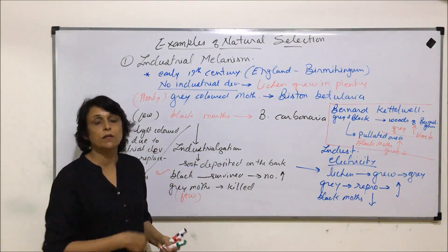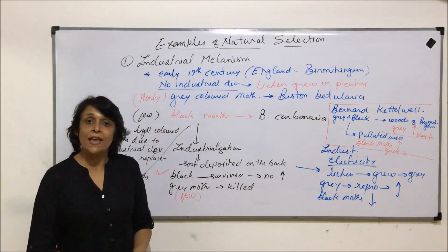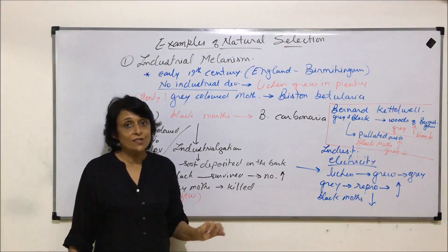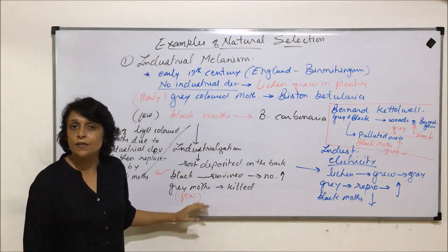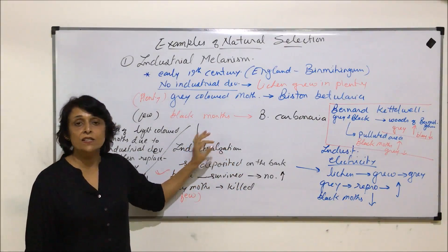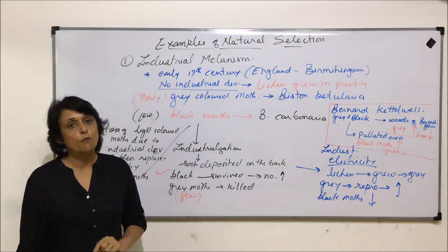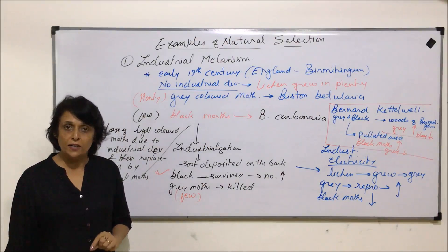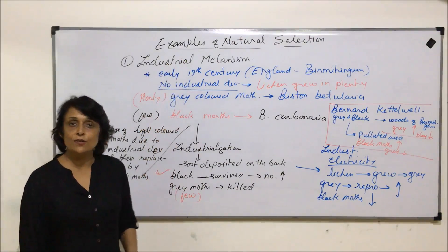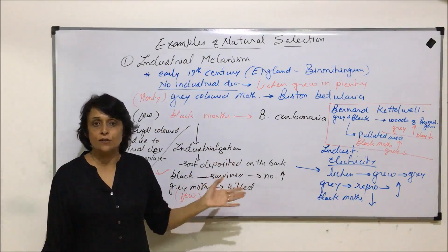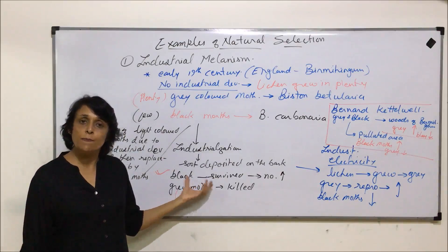This example of industrial melanism helps us understand natural selection. The natural selection theory given by Darwin states that nature selects the organism or that variability which is most suited for the environmental condition. This is our first example in support of the theory of natural selection given by Darwin. In the next video, we'll take up the next example.